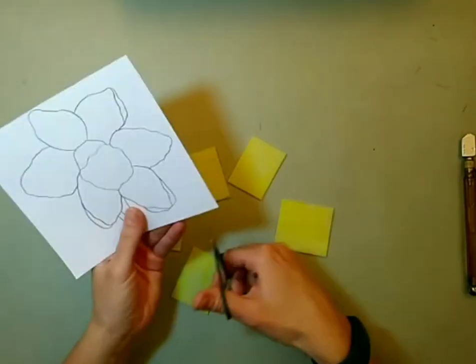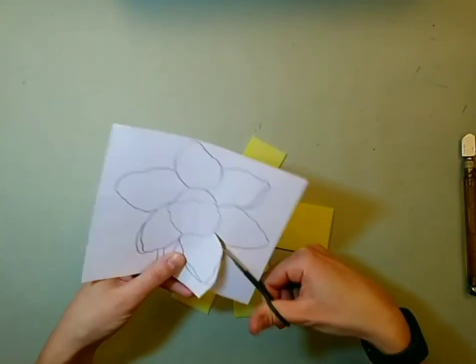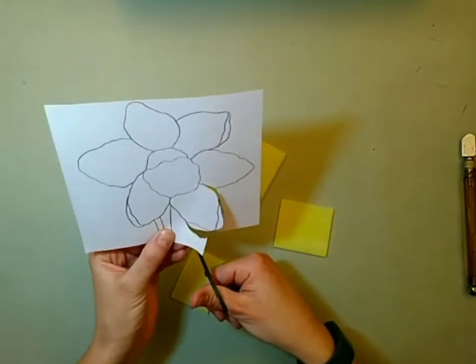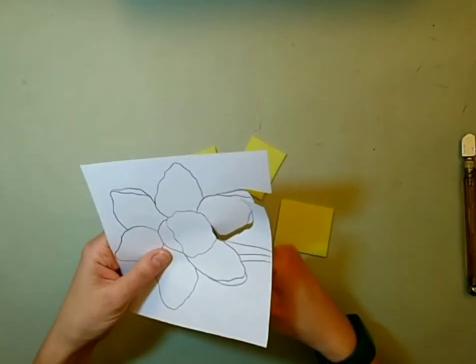If you're working with big sheets of stained glass, you want to measure your petals and then transfer the measuring to your stained glass. You want to pre-cut some smaller pieces to make sure you don't waste too much of the bigger sheets.